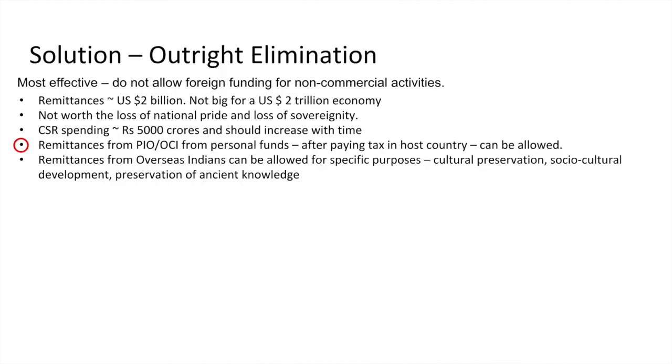What we can allow is personal remittances from PIOs, OCIs, or NRIs from their own personal funds after paying tax in their host nation, routed towards a limited set of objectives such as cultural preservation and preservation of ancient knowledge systems. This is the solution we are proposing. There were other solutions we wanted to discuss in terms of additional regulation. The remittances are 18,000 crores, of which 15,500 crores is fresh money and 2,500 crores is interest on savings. Thank you very much.